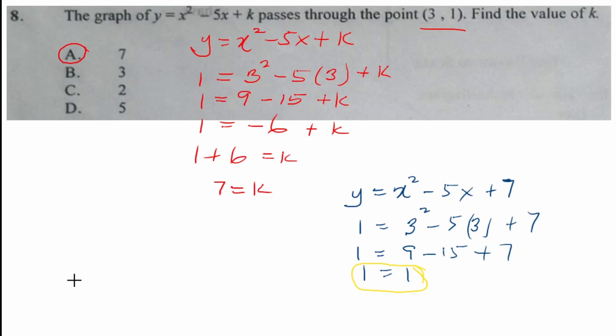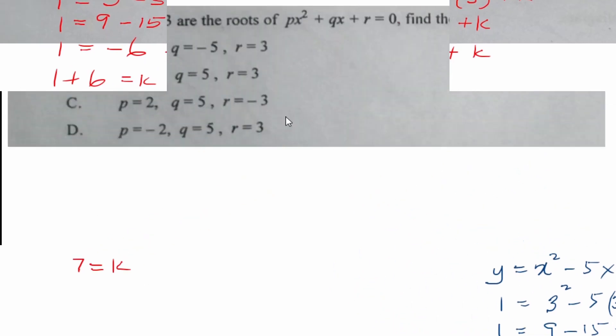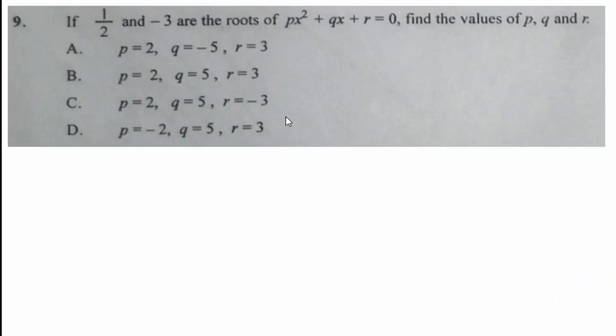Let's move on to the next question, which is question 9. Question 9 says that if 1/2 and negative 3 are the roots of px squared plus qx plus r equals 0, find the values of p, q, and r.